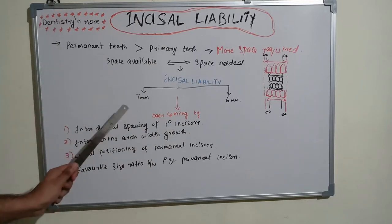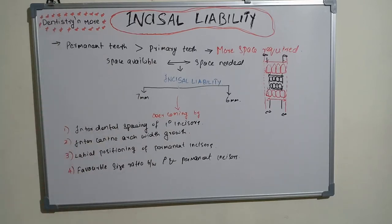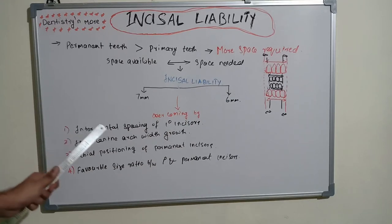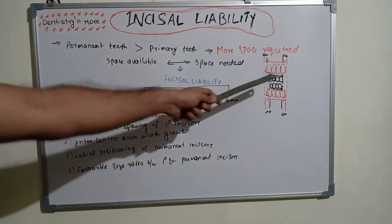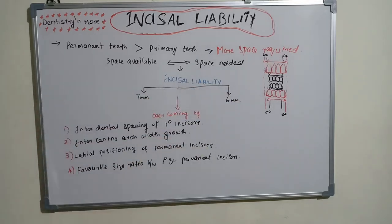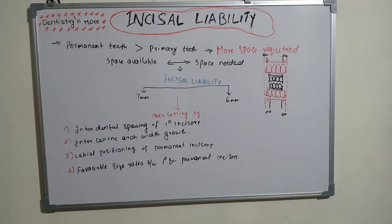Incisor liability is 7 millimeters in the maxilla and 6 millimeters in the mandible. This is achieved through four mechanisms that provide more space to accommodate the permanent incisors.